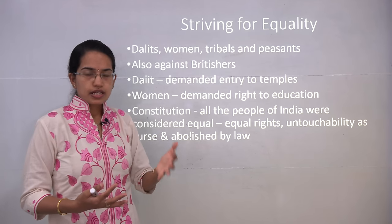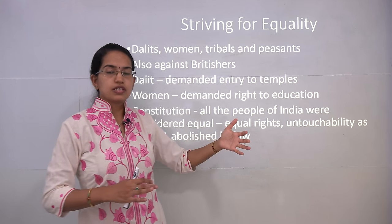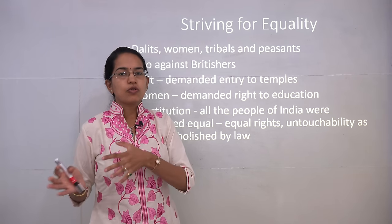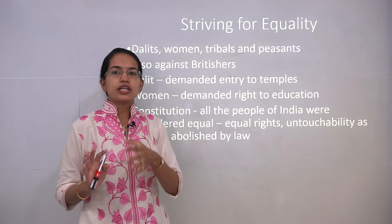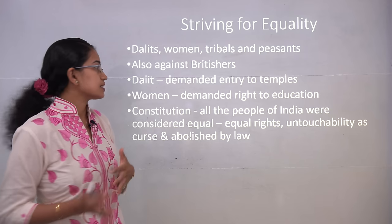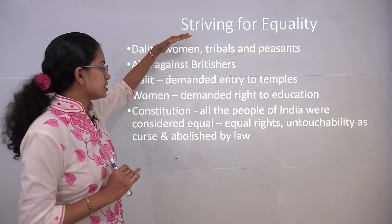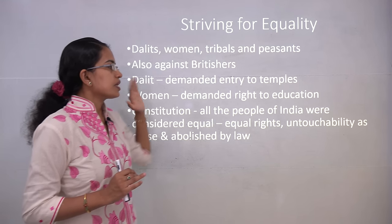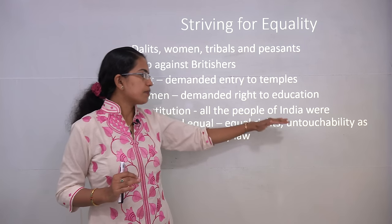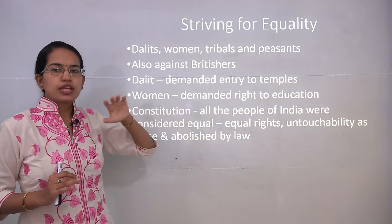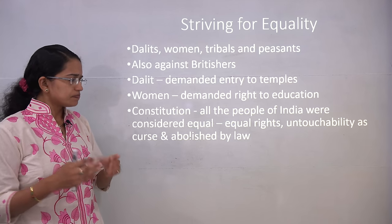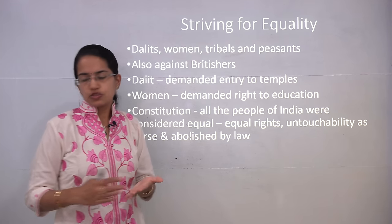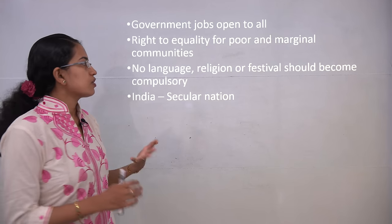B.R. Ambedkar was the first person in the Mahar community to receive education up to college level and later go to London for higher education, pursuing a law degree. When the Constitution of India was drafted, it clearly stated that all people of India are equal — with equal rights and equal opportunities for all. The caste system and untouchability were declared a curse to be abolished, as proposed in the Constitution.